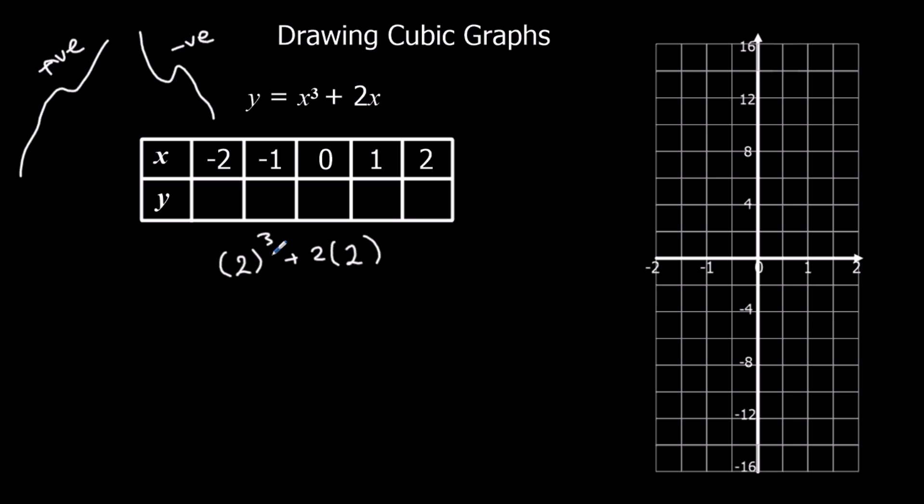So 2 cubed, 2 times 2 times 2, that's 8, plus 2 2's, which is 4. So 8 plus 4, that's 12. 1 cubed, plus 2 times 1. 1 cubed is 1, plus 2 times 1, which is 2. So 1 plus 2, 3.